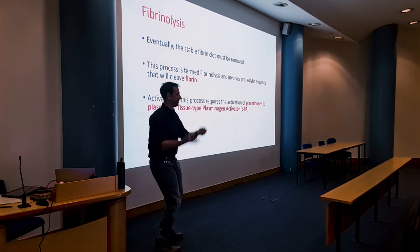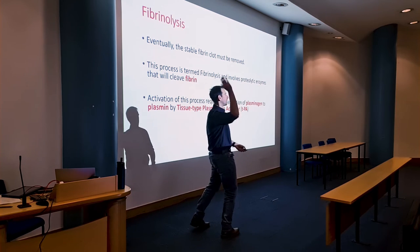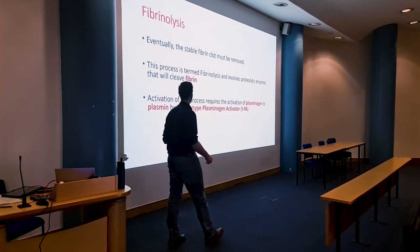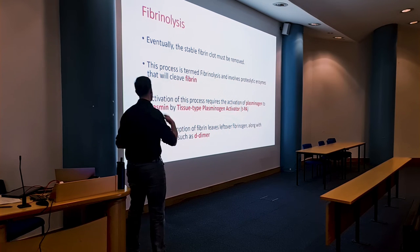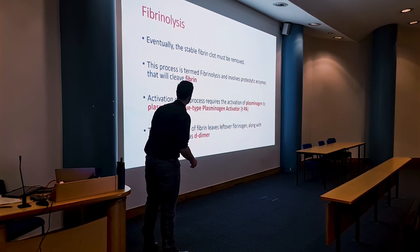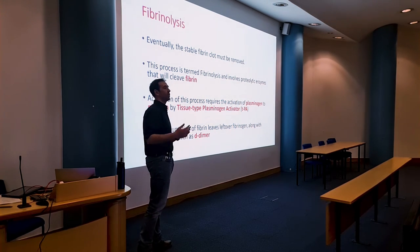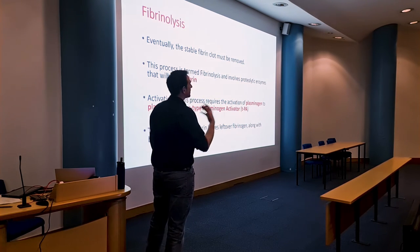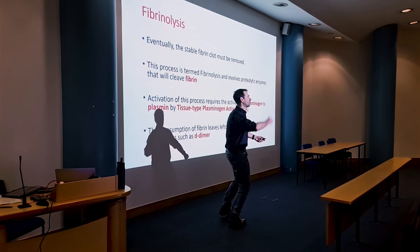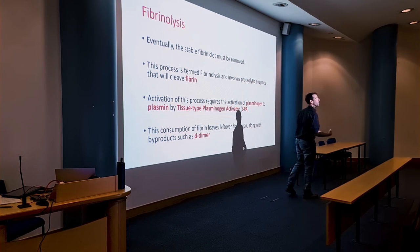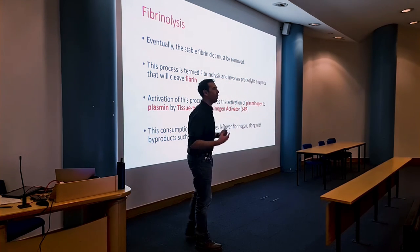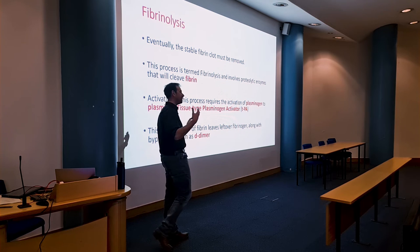Fibrinolysis is mediated by tissue-type plasminogen activator (TPA). A plasminogen activator turns plasminogen into plasmin, and plasmin just wants to destroy fibrin. This consumption of fibrin leaves residues in your bloodstream, including D-dimers. A positive D-dimer test means your body is trying to destroy a lot more clots than it's supposed to — there's a problem somewhere — putting you at high risk of DVTs, PEs, MIs, and strokes.